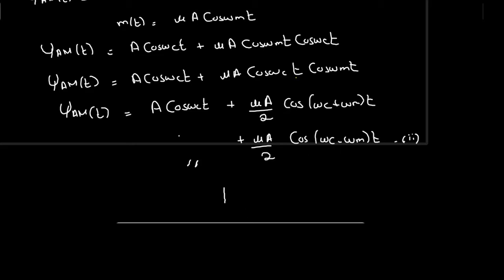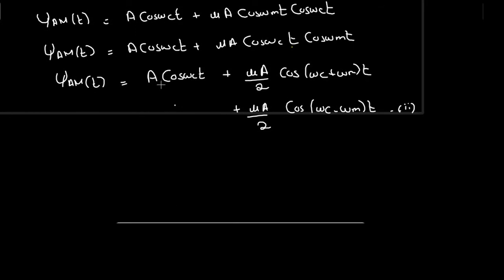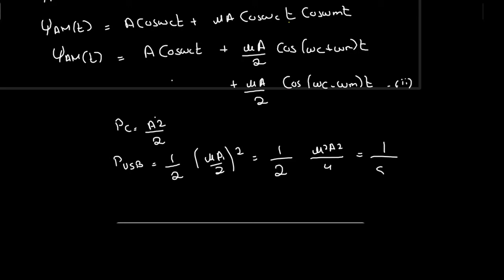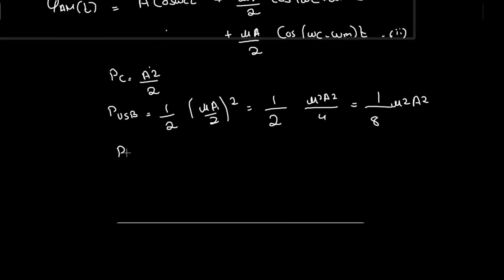To find the power of these signals, we find them individually. The carrier power is the mean square value of A cosine(ωc·t), which is A²/2. The power of the upper sideband equals half of (μA/2)², which gives (1/2)·(μ²A²/4) = μ²A²/8. Similarly, the power of the lower sideband is also equal to μ²A²/8.